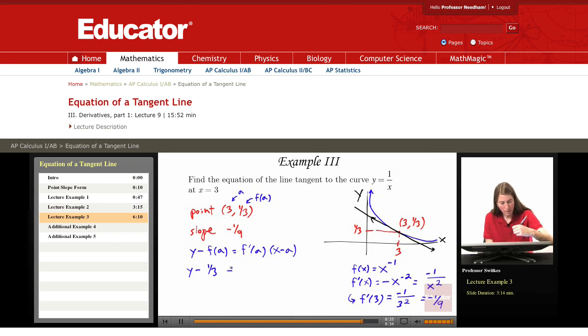And so we have y minus 1 third equals slope which is negative 1 ninth times x minus a. So times x minus 3. And now we can clean things up and get our final form in slope intercept form. So we have y equals negative 1 ninth x. We'll have a plus 1 third plus another 1 third. So we'll have a plus 2 thirds.